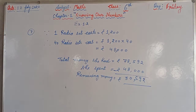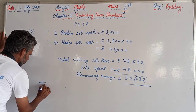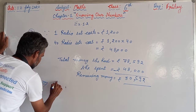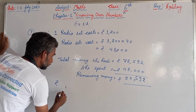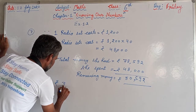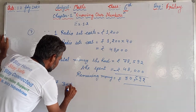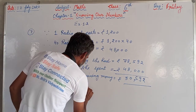The remaining money is Rs 30,592. Therefore, Rs 30,592 will remain with her after purchasing the radio sets.